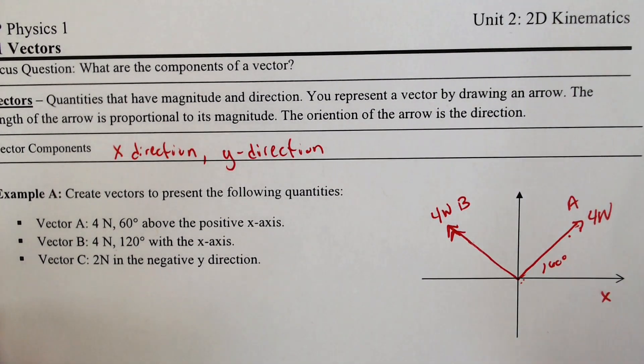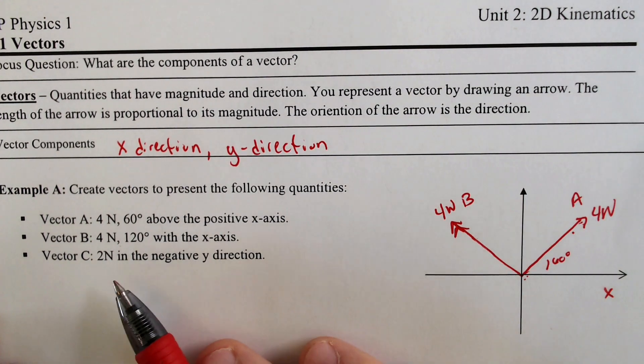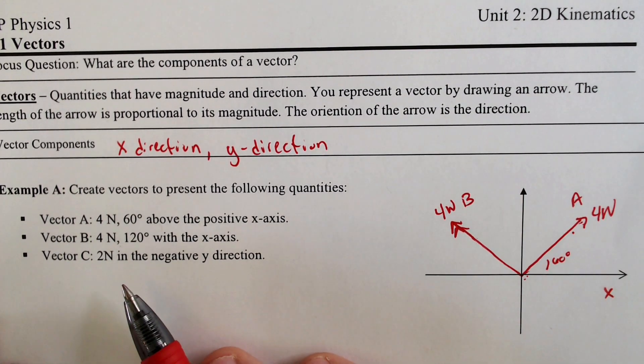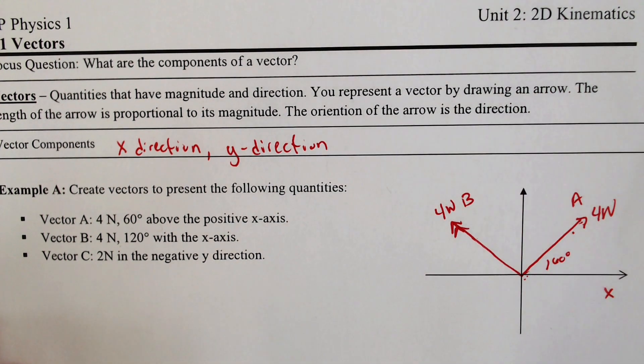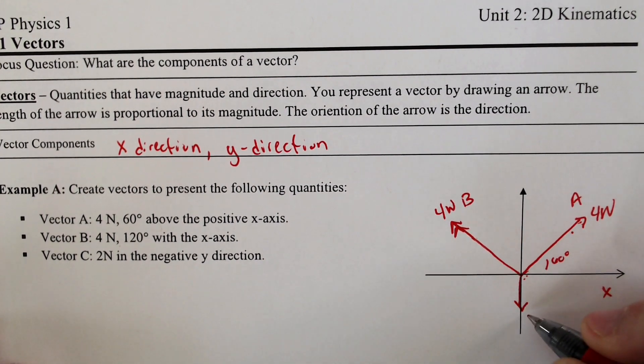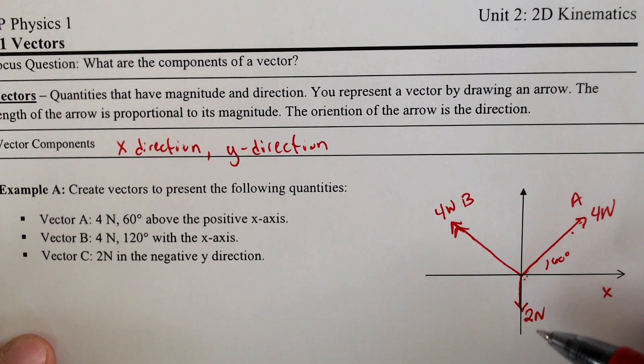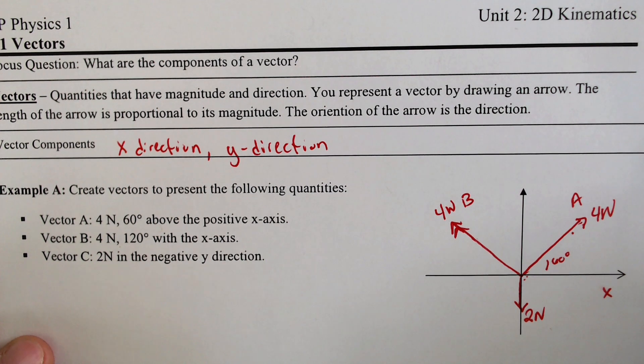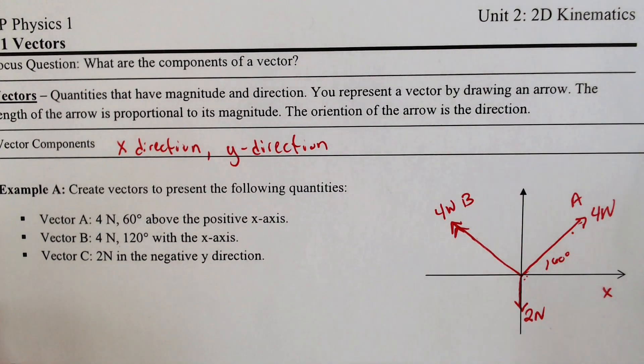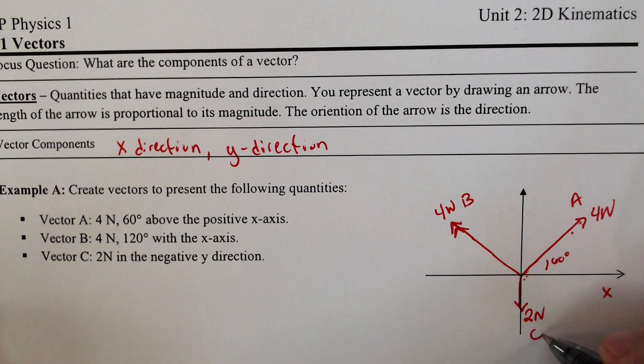We need to make sure that 4 newtons is also here for vector B because the newton determines the magnitude, which is how long the hypotenuse, so to speak, of the vector is. Vector C is 2 newtons in the negative direction of y, so it is going to be half the length because it is 2 newtons instead of 4, and it is going straight down because it's negative in the y direction. So that is the three vectors that we have there. We could label it vector C.